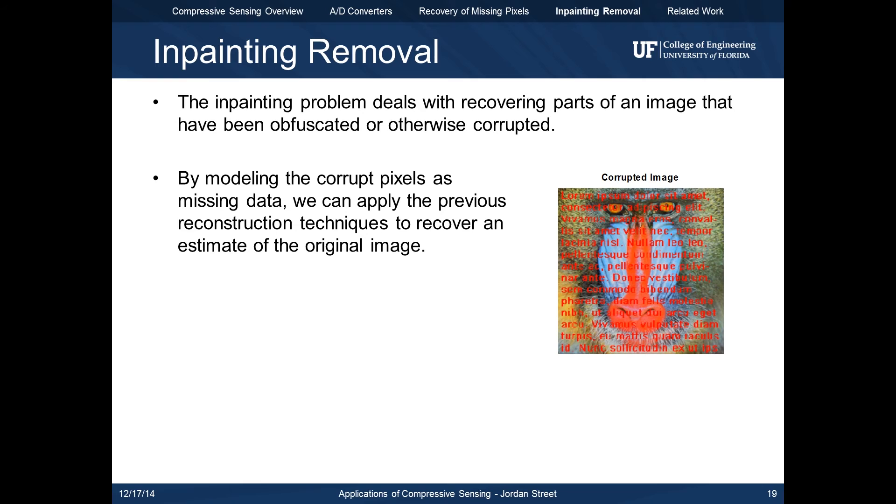We can apply similar techniques to the inpainting problem. On the right you see an image corrupted with a text overlay. By modeling the corrupt region of the image as missing data, which in this case is all of the red text, we can apply the same reconstruction techniques to recover an estimate of the unobstructed image.